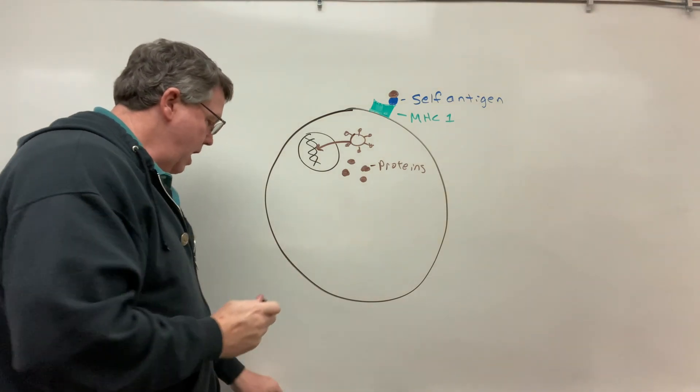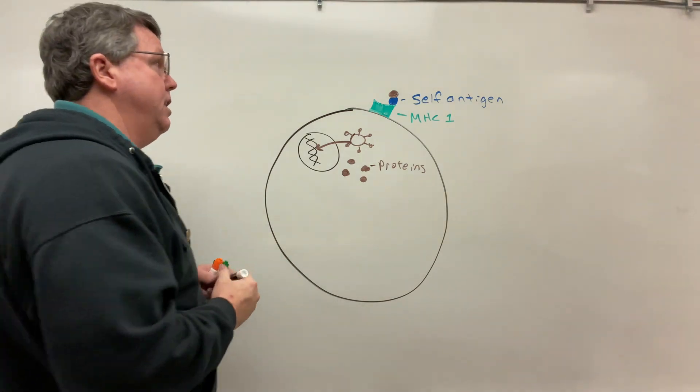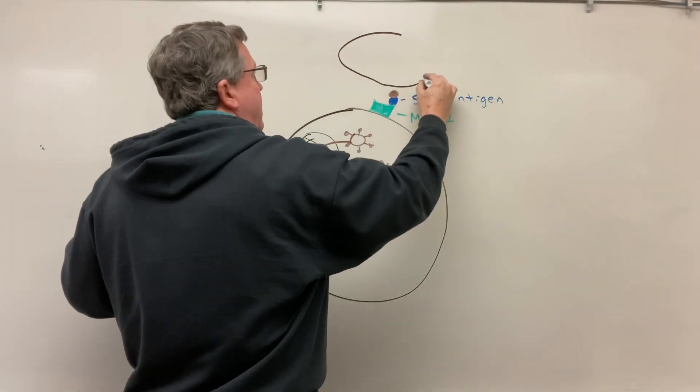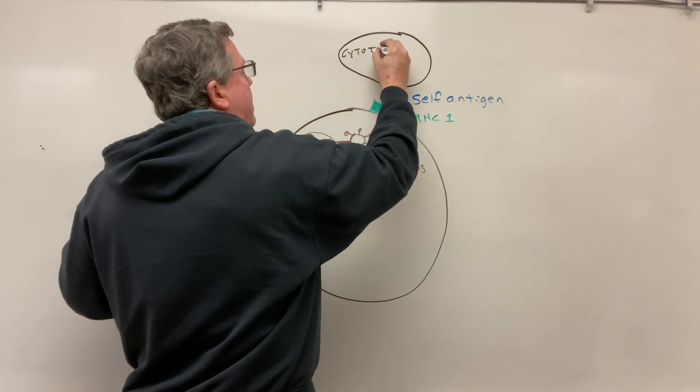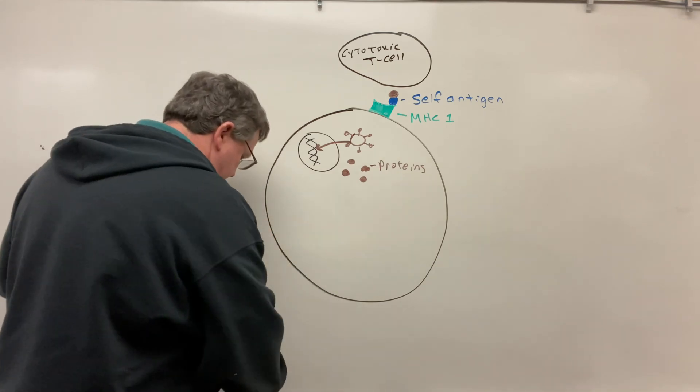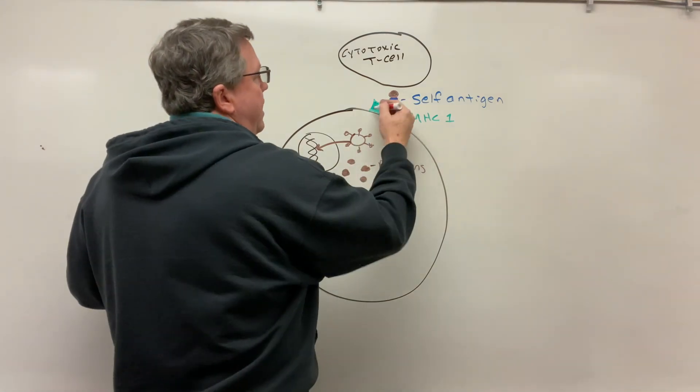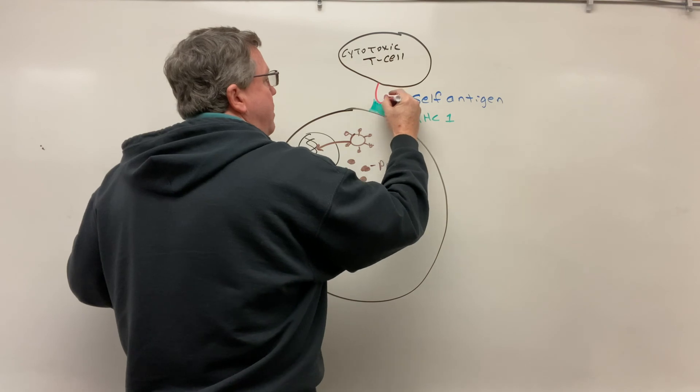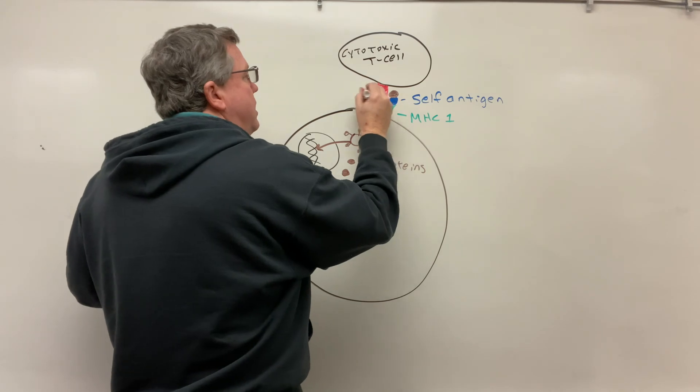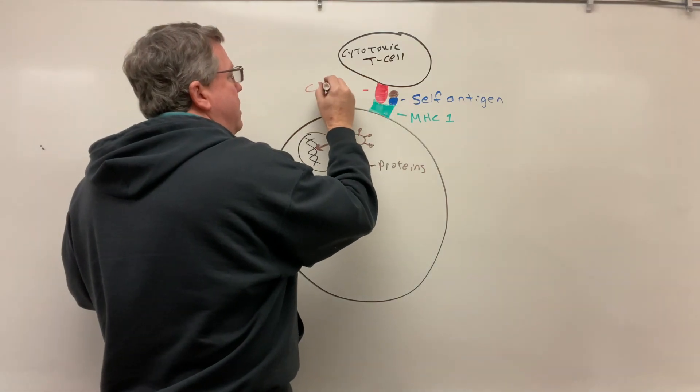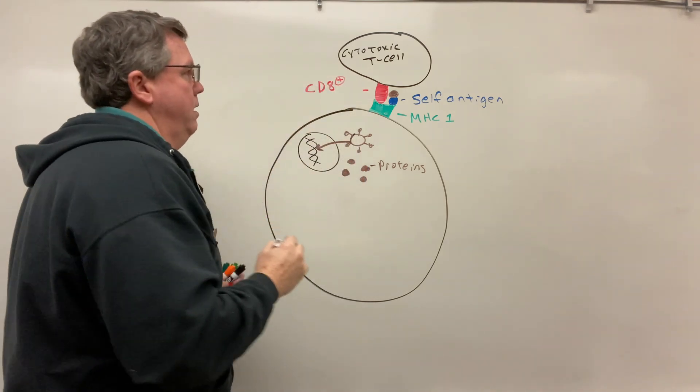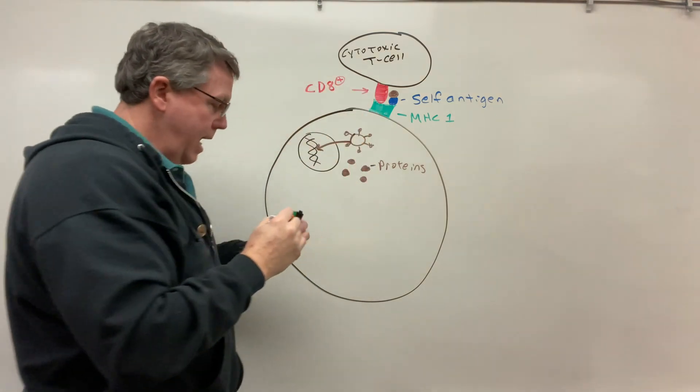Now what's going to happen is this: I have my cytotoxic T cell now, so here's my cytotoxic T cell. And on the cytotoxic T cell you have a protein that can attach to this MHC1, so we have this protein here and this is called CD8 positive.